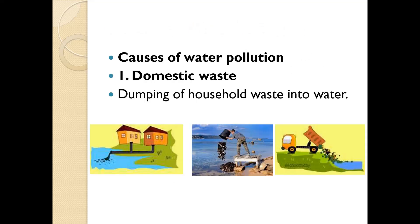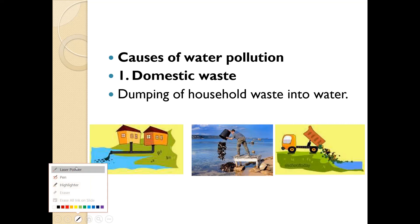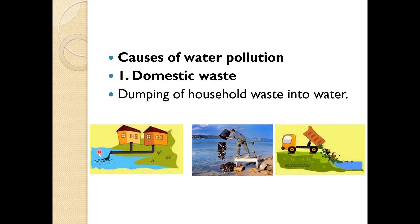First, domestic waste. Dumping of household waste into water comes under this category. The waste from houses — that is, drainage from houses — is directly mixed into the water, causing pollution. We are also throwing garbage into the water. The municipal garbage collected from households is being dumped into water. These are the causes of pollution by domestic waste.